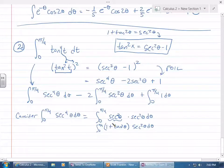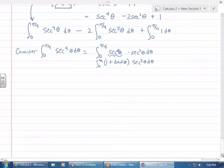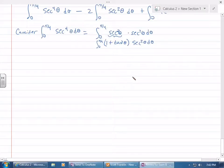Integral from 0 to pi over 4. Then this is where you do a substitution. Let u be tangent, and then du is secant squared theta d theta.